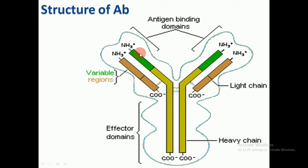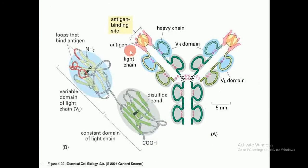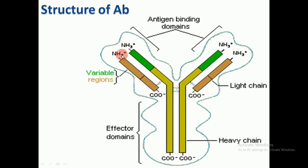The same applies to the heavy chain — this green one also has a variable region where the amino acid sequence changes, and a constant region where the amino acid sequence does not change. The carboxy-terminal end of the antibody is called the effector domain, while the N-terminal end is the antigen-binding domain, which binds to the antigen.